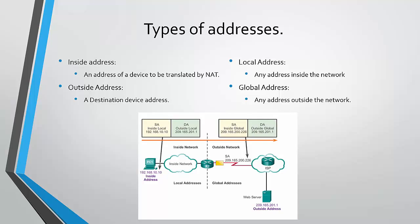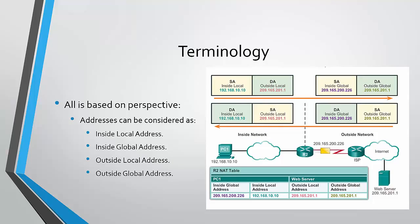All these terms depend a lot on perspective — it depends on what we are seeing and where we are standing. It's the definition or the type of address that an address might be. In this example, an inside address can be the one found on PC1; it's a private address and it's inside the network. An outside address might be the web server, which has a public address and it's outside the network. Addresses can be considered as inside local, inside global, outside local, or outside global.